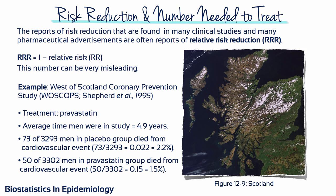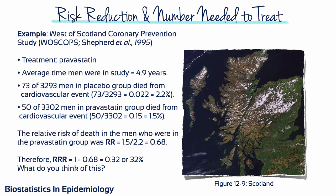Take a look at the results of the study described by Glazer. During the study, 73 of the 3,293 men in the placebo group died from a cardiovascular event, and 50 of the 3,302 men in the pravastatin group died. Thus, 2.2% of the placebo group died and 1.5% of the pravastatin group died. The relative risk of death was 1.5 divided by 2.2, which equals 0.68. Therefore, the relative risk reduction was 1 minus 0.68, which equals 0.32 or 32% — a pretty big number, suggesting pravastatin really lowers the risk of death.